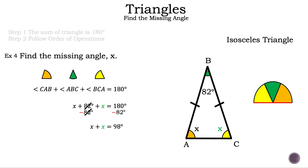Now we have X plus X is equal to 98 degrees. We need to think of a number that when added to itself gives 98 degrees, and that number is 49 degrees. So 49 degrees plus 49 degrees is equal to 98 degrees. Another way of thinking about this: the total is 98 degrees and we have two angles that are the same — the orange angle and the yellow angle — so we can divide 98 degrees by 2, and the result is 49 degrees. So X, the missing angle, is 49 degrees. That is example four.